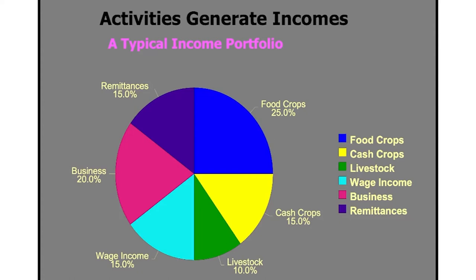Even if people are growing food crops, in this diagram 25% of your land may be used for food crops, but you will still grow cash crops on some land, maybe some fodder crops for livestock. Some members of the family may go for wage income or business, some may migrate. When I was doing work in India and also in Kenya, I found that in every household people are doing different activities — from the same family, one or two sons or daughters may be educated and go for government jobs, somebody is looking after the livestock, somebody is looking after the farming.